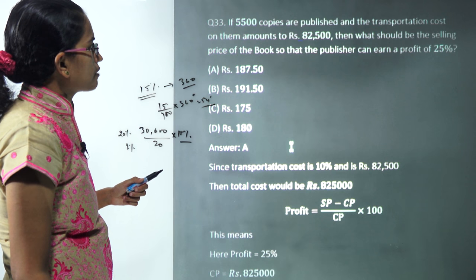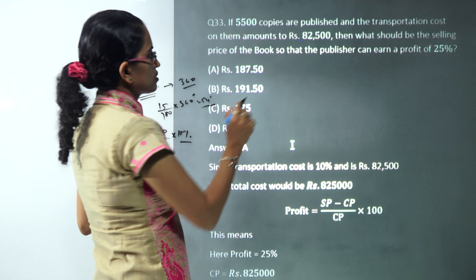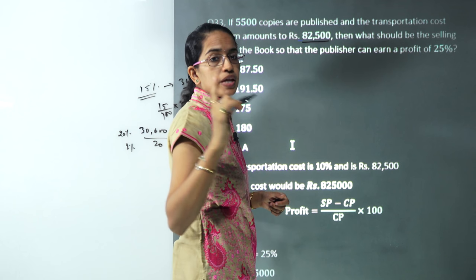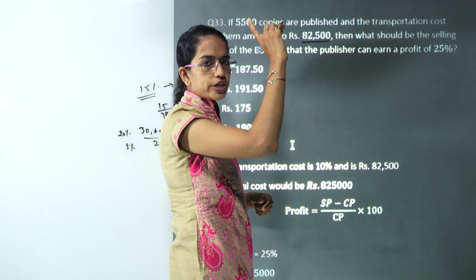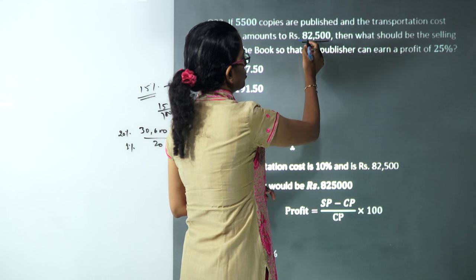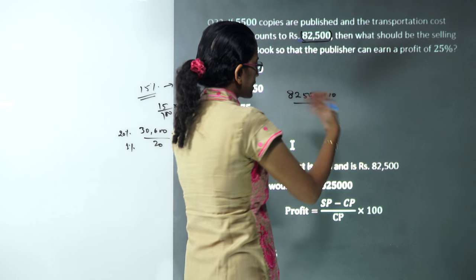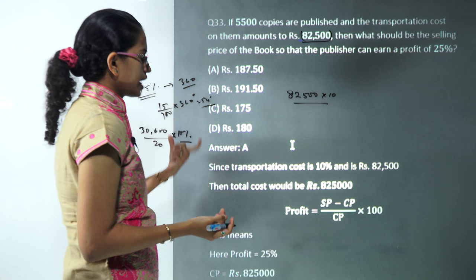The next question: if there are 550 copies to be published, the transportation cost is 82,500. This transportation cost, as we saw in the diagram, was 10%.